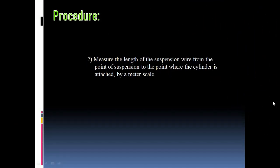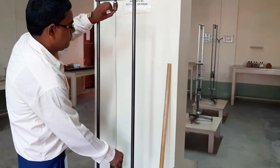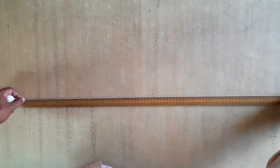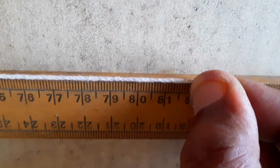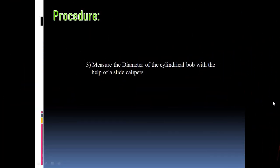Second is measuring the length of the suspension wire from the point of suspension to the point where the cylinder is attached by a meter scale. Here is the demonstration. The next step is to measure the diameter of the cylindrical bob with the help of a slide caliper. Let's look at the demonstration.